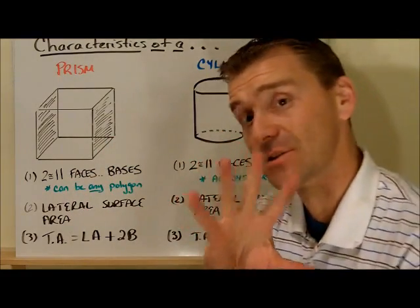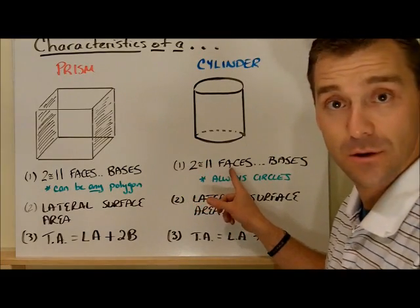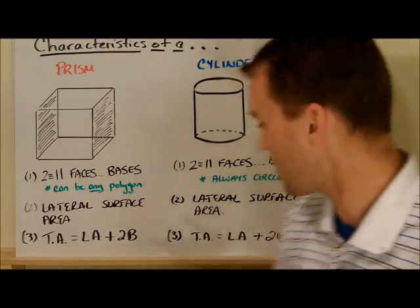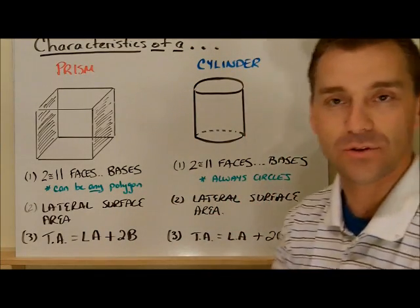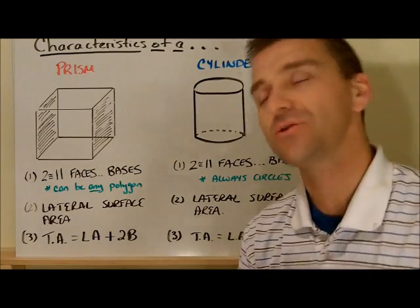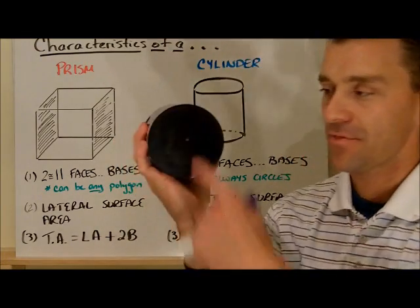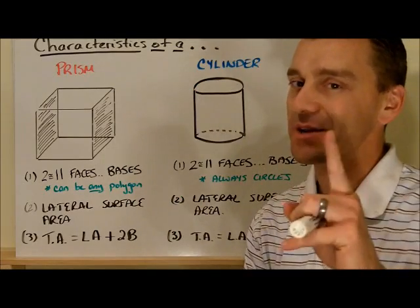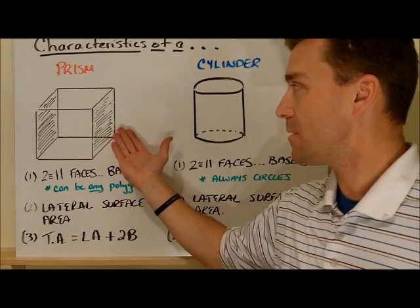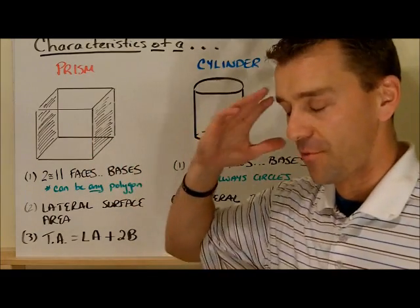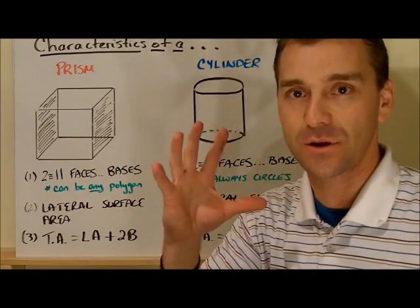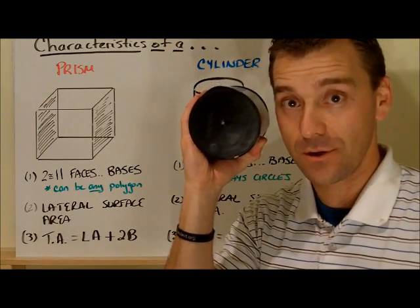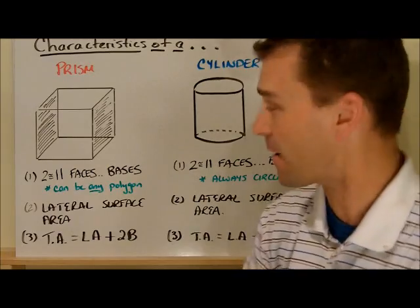But there is a characteristic that's the same. It has two congruent parallel faces that we call the bases. The only difference, as you know a cylinder, the actual bases are always going to be circles. That's actually nice, because in a prism, you had to remember how to find the area of all kinds of different polygons. Well, the base is always going to be a circle, so that's a little easier in that regard.